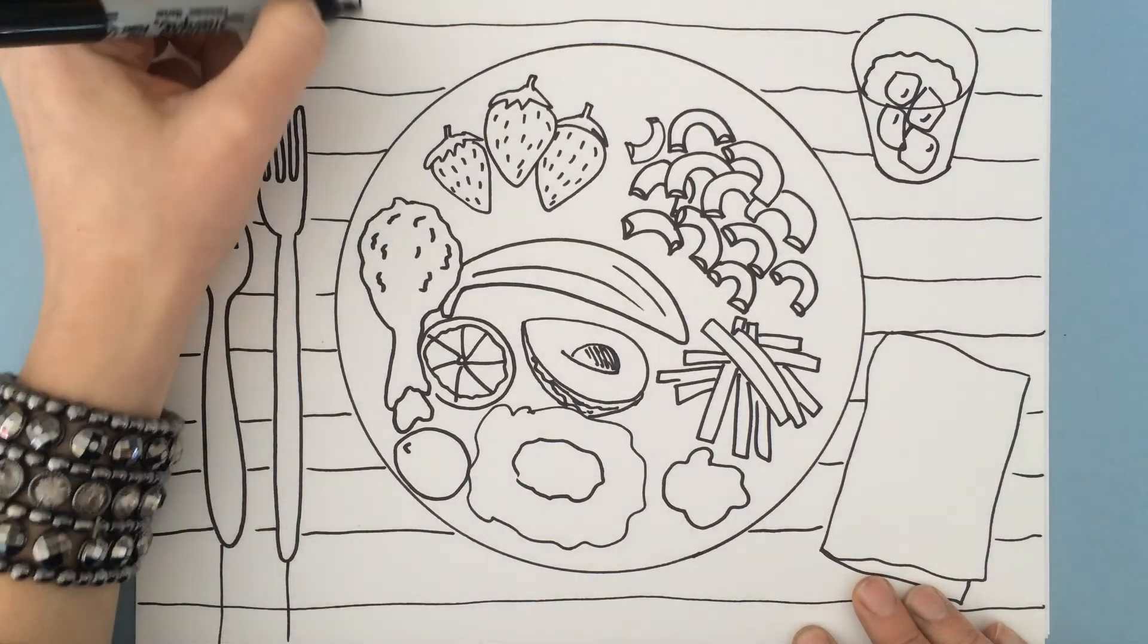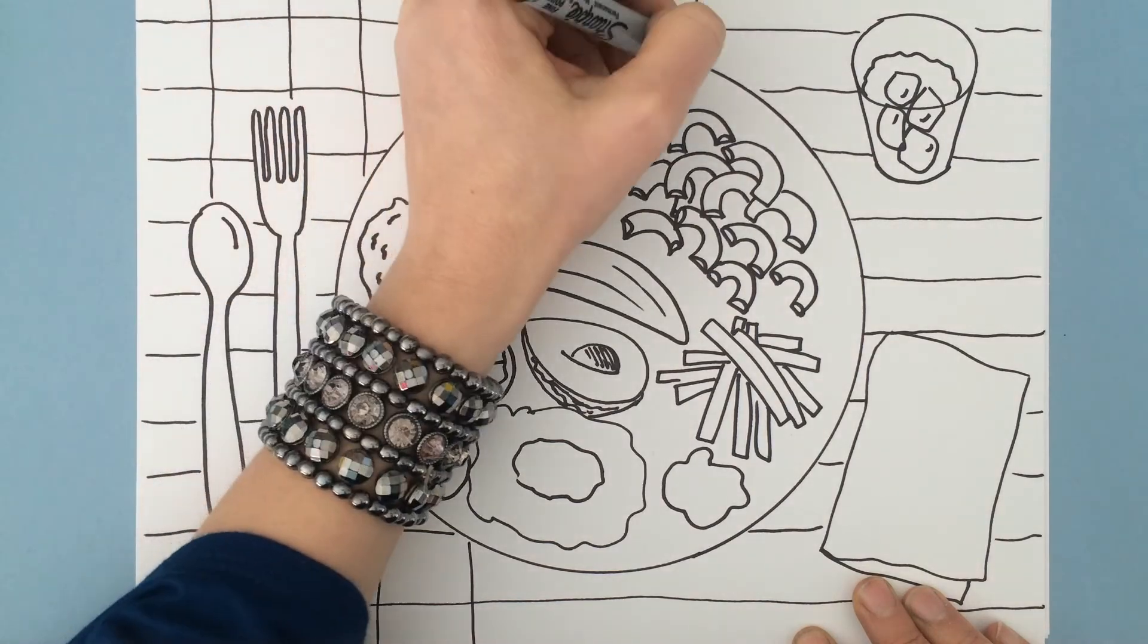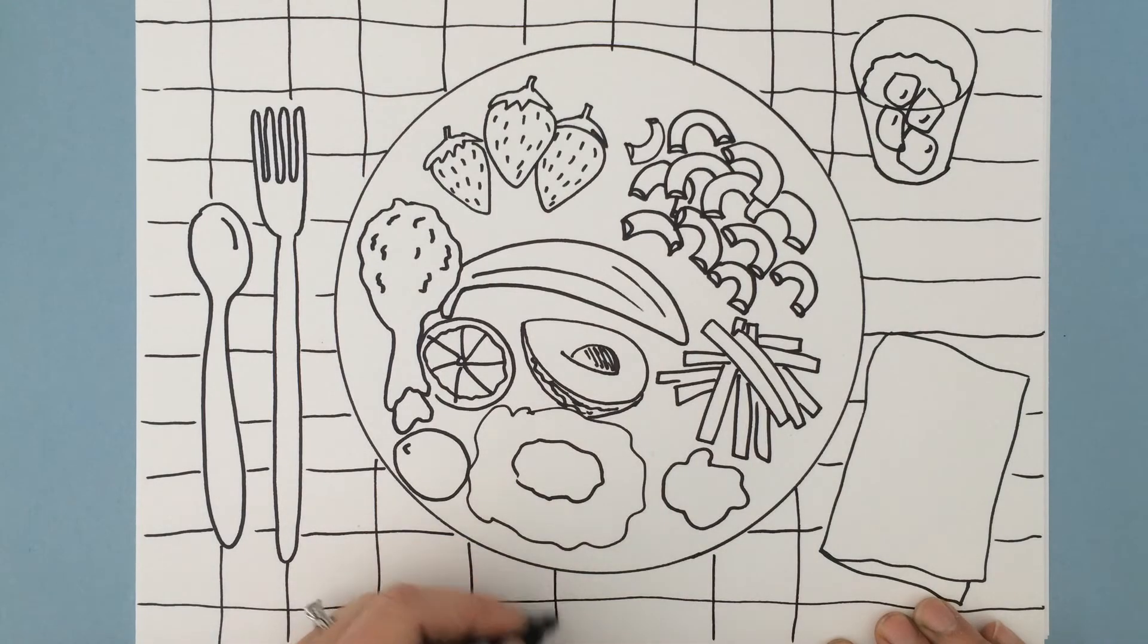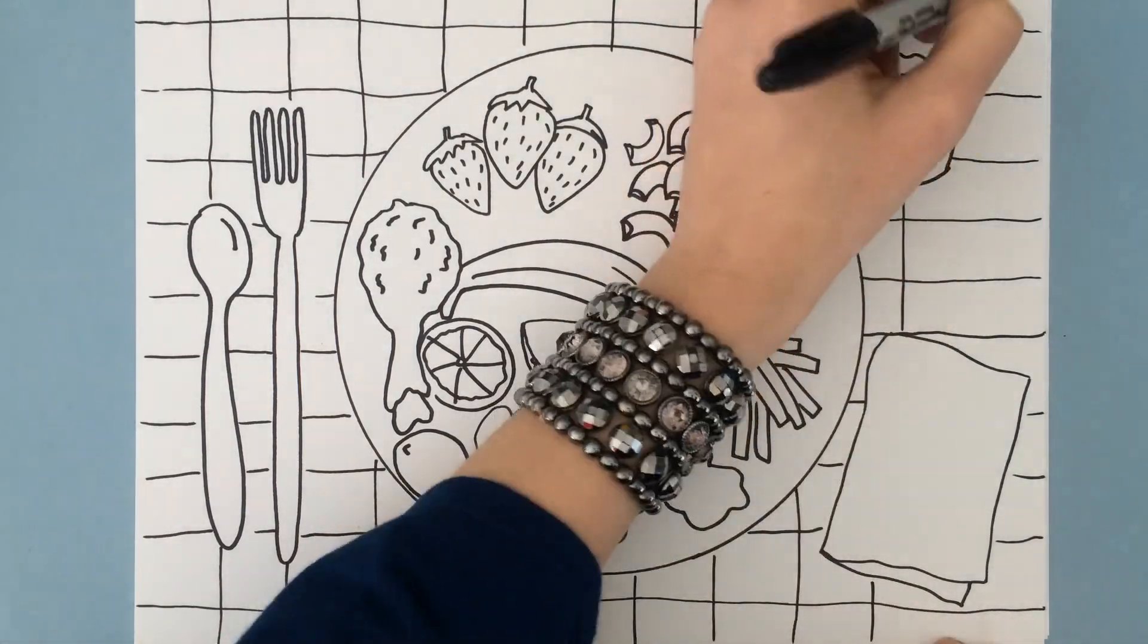This is how I'm making my checkered tablecloth. But notice I don't go through my plate because I'm pretty sure I can't see the tablecloth through my plate whenever I'm eating dinner, unless it's a glass plate or a clear plate. And sometimes you do have those.